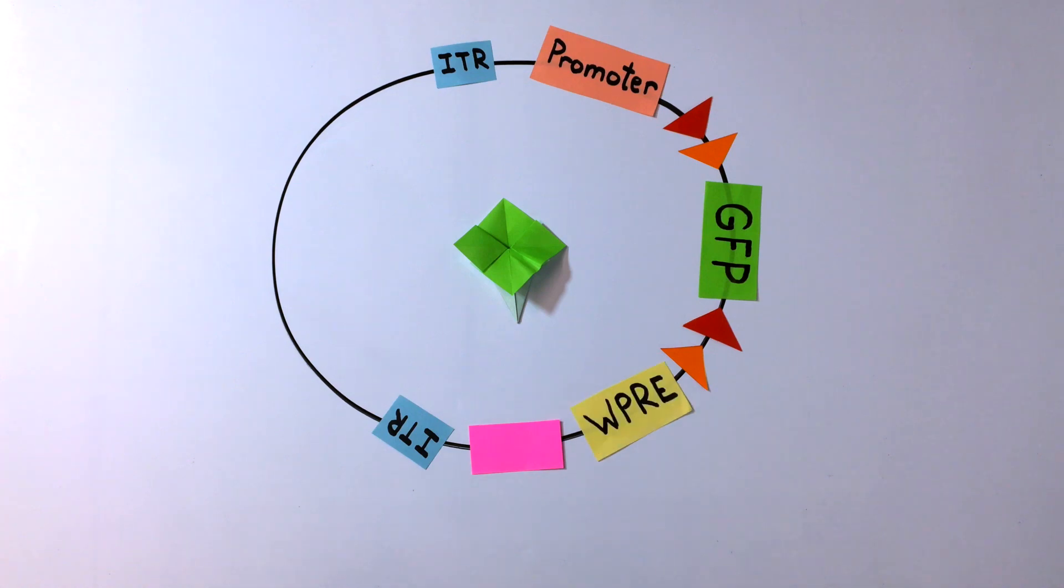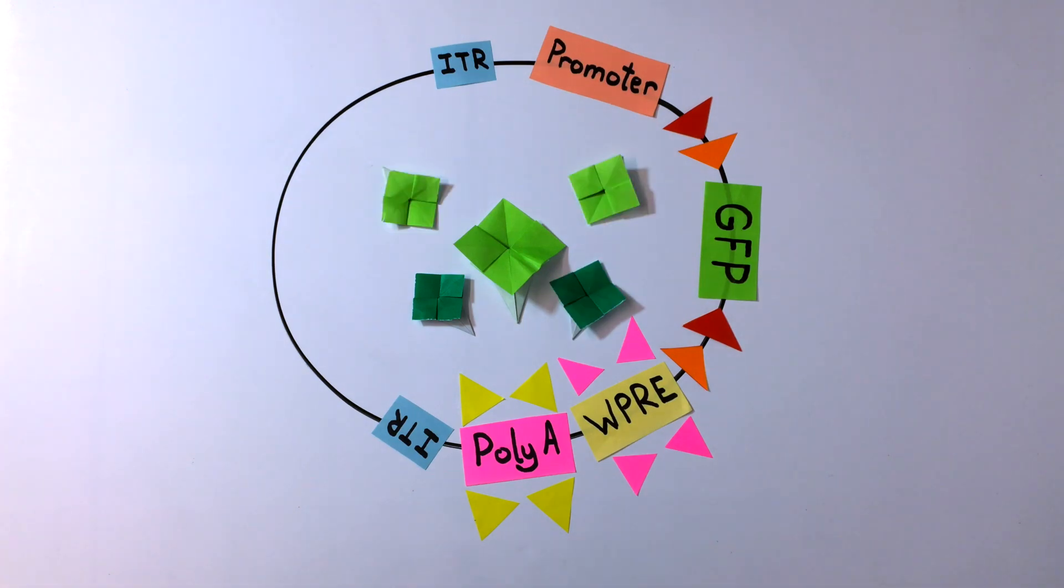I'll describe the WPRE and the polyA sequence, which are two examples of cis-regulatory sequences commonly found in AAV transfer plasmids. Both of these elements usually appear at the end of the AAV genome, just upstream of the final ITR.